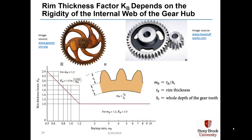The rim thickness factor K_B accounts for the rigidity of the internal web of the gear. It is defined by the backup ratio m_b, which equals the rim thickness divided by the whole depth of the gear. A low backup ratio (like the old wooden gears with many holes) causes the gear to bend internally. For a solid gear, which is typical in homework problems, K_B equals 1.